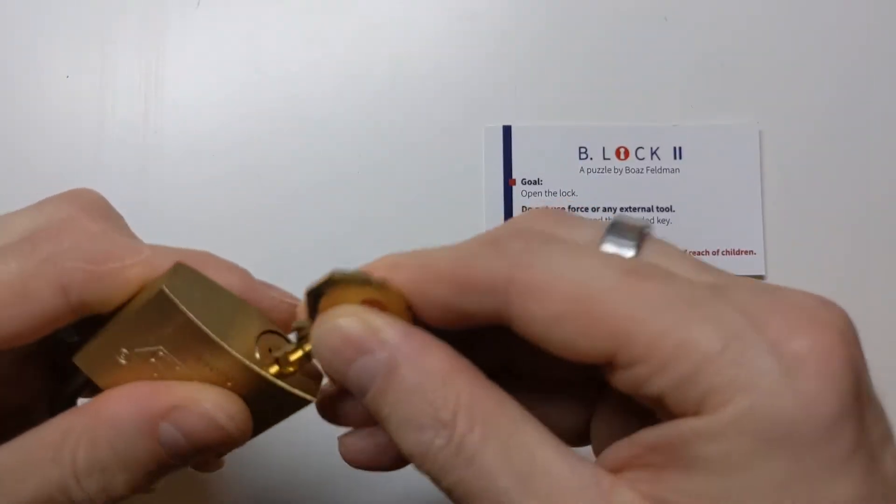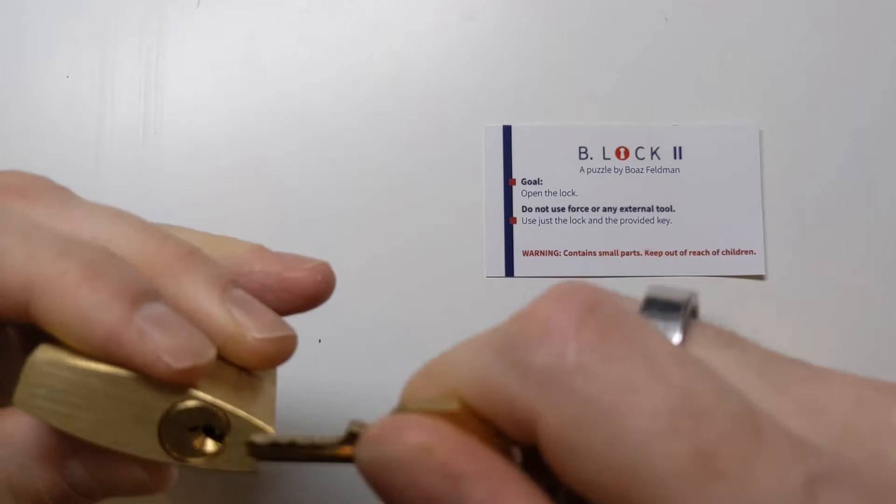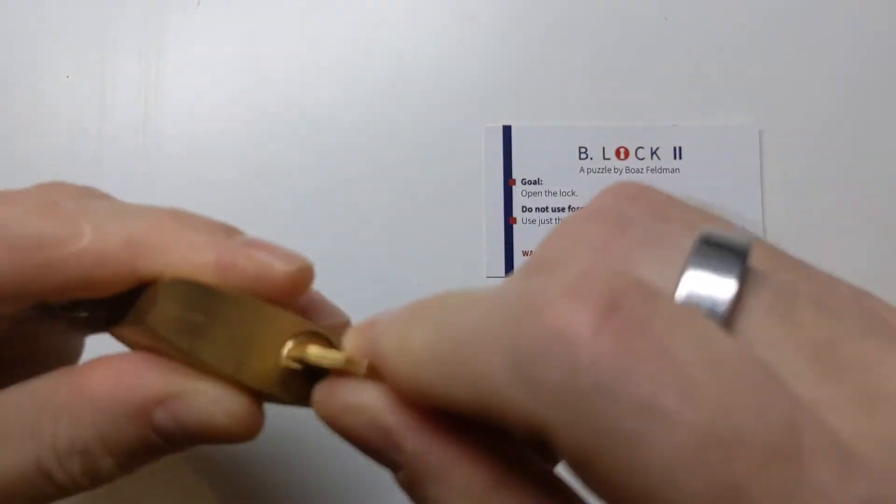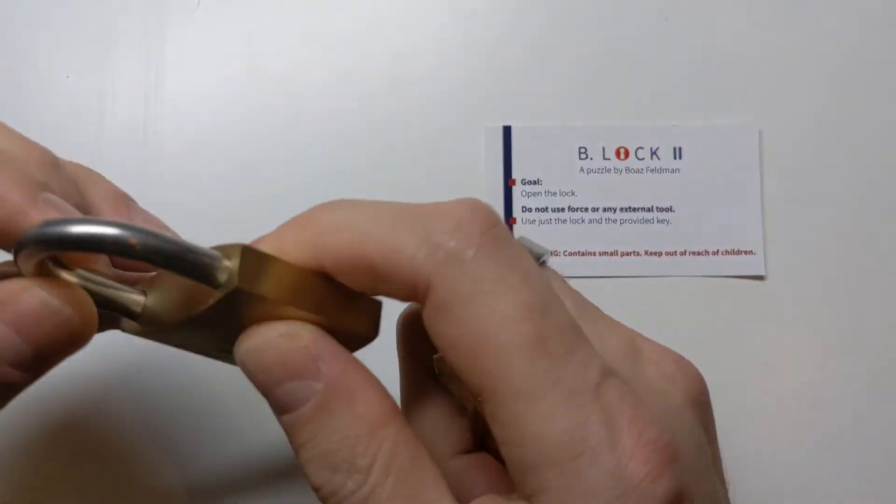According to the instructions, all I need is the key and the lock. So, I guess I'll stick the key in the lock, turn it, nothing happens. It doesn't turn. That would have been too easy, right?